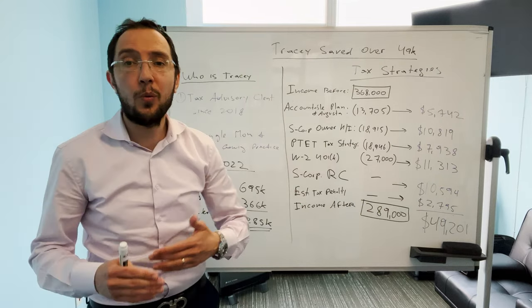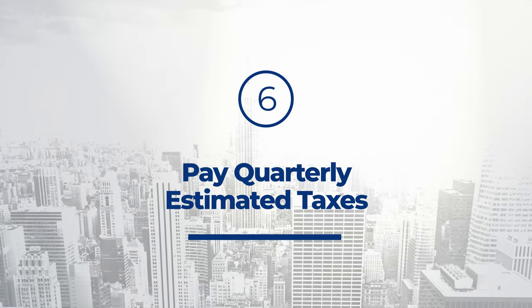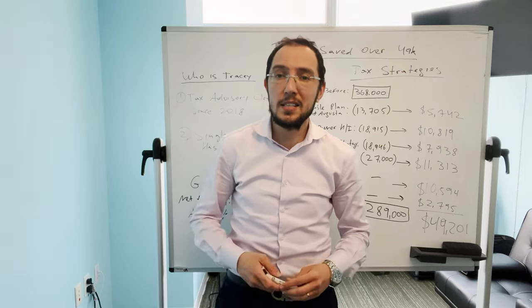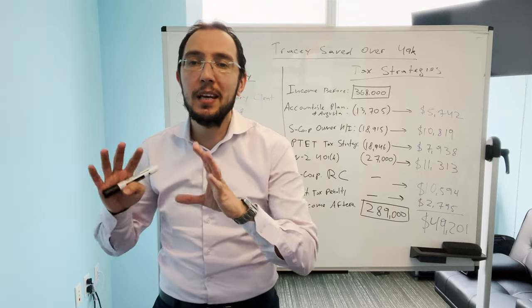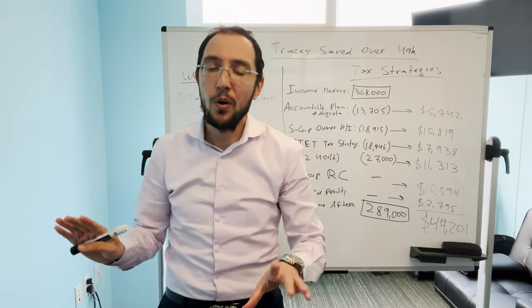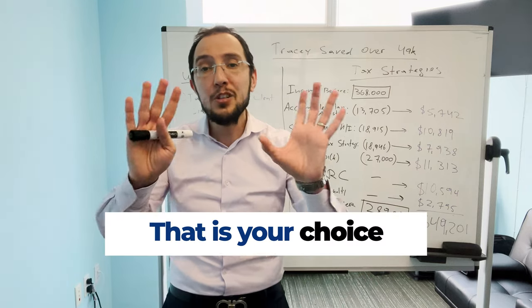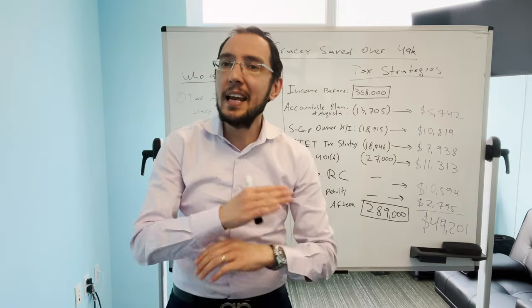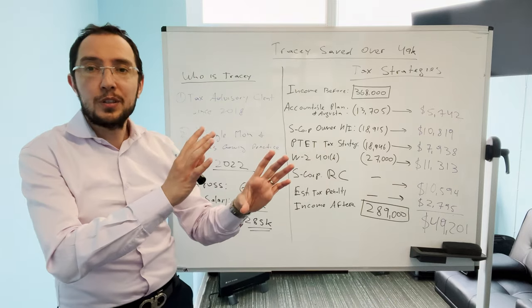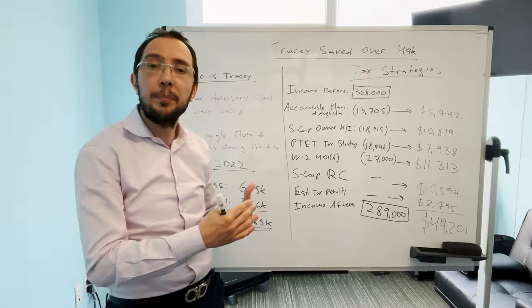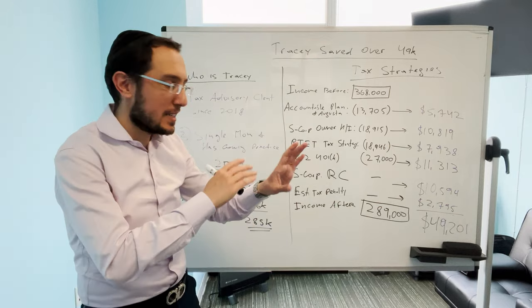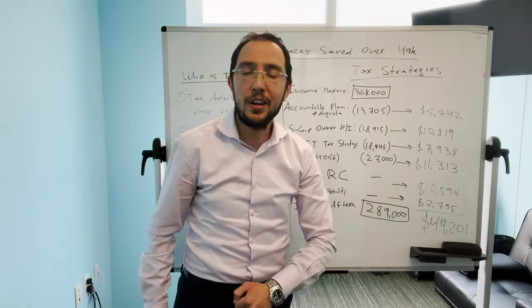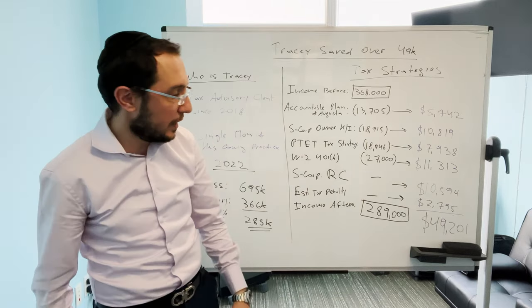Now, another thing that she does really well and she listens to us as her tax advisors is that she pays her quarterly estimated taxes. Now, some people choose not to pay their quarterly estimated taxes, some business owners are like, you know what, I don't want to pay this tax, I want to instead reinvest my money into the business and that's what I want to do. If I have to pay penalty at the end of the year, then I will pay it. That is your choice. Tracy, on the other hand, that is not what she wants to do and she does not like to pay penalties and she's pretty comfortable paying her estimated taxes. So when Tracy paid her estimated taxes, she saved about $2,795 on underpayment penalty.